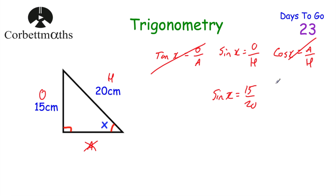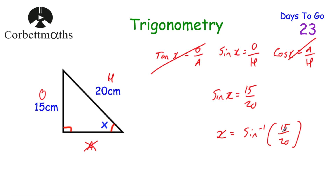This angle is not equal to 15/20ths of a degree — that's the sine of the angle. To find the angle itself, we do the inverse sine. So X equals inverse sine of 15/20. On the calculator, press shift, then sine, then enter 15/20 as a fraction and press equals. We get X equals 48.59 degrees to two decimal places.